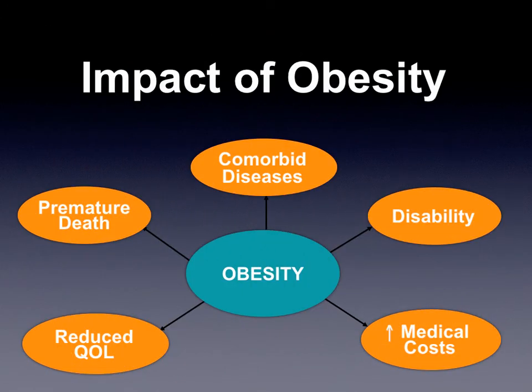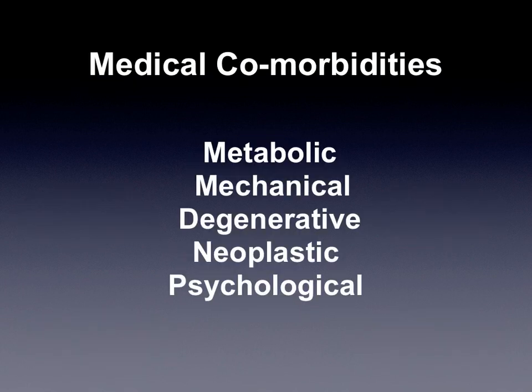If you look at the impact of obesity on an individual, we see reduced quality of life, premature death, an increase in comorbid diseases, loss of work and disability, and individual health costs that are skyrocketing. These comorbid diseases can be thought of as metabolic diseases, mechanical diseases, degenerative, cancer, and psychological.